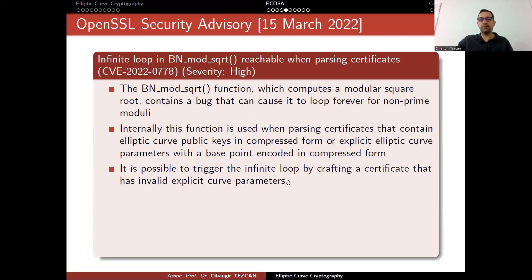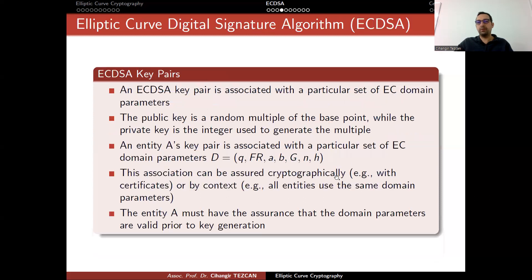It is possible to trigger the infinite loop by crafting a certificate that has invalid explicit curve parameters. This is what we are talking about. If you don't check if the parameters are valid or not, this function creates an infinite loop. And in the OpenSSL implementation, they weren't checking the domain parameters, as we mentioned here, prior to key generation or validation.